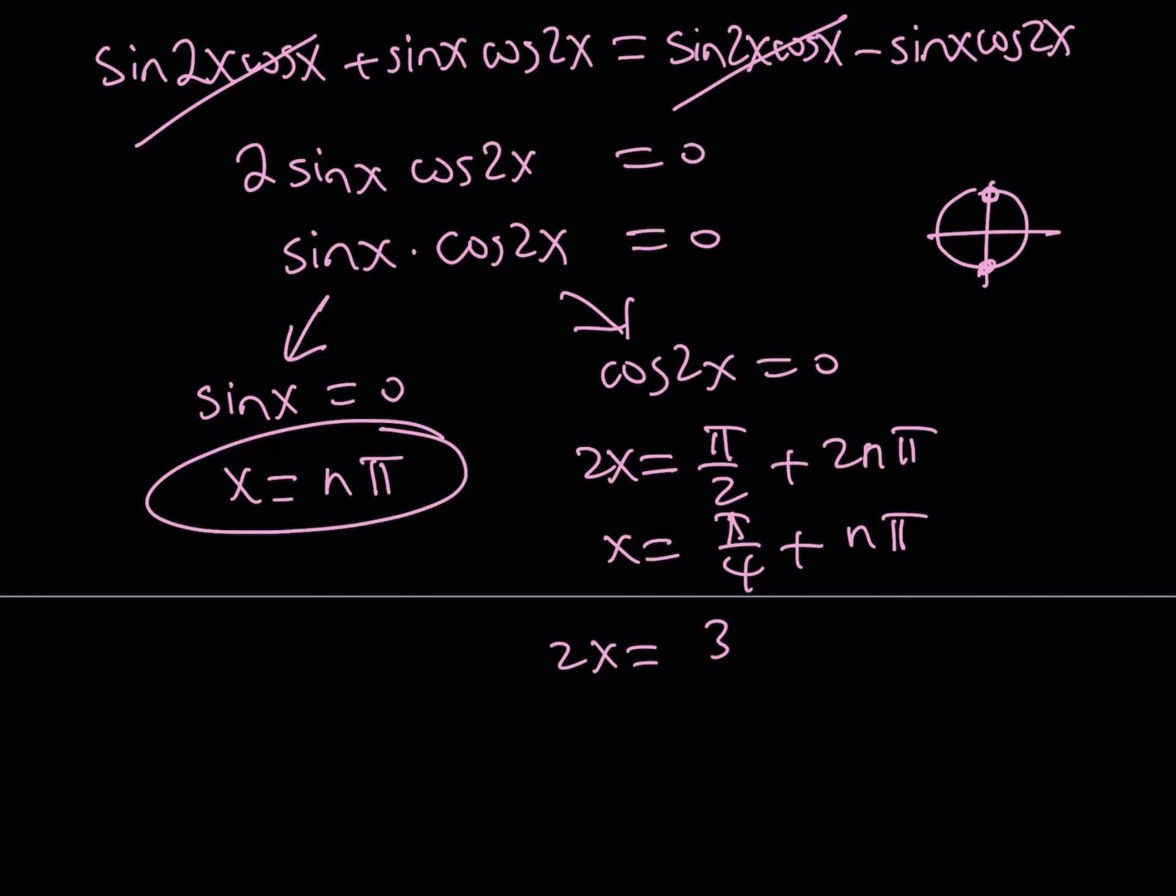But, of course, at the same time, we can do 3 pi over 2 plus 2n pi, and dividing both sides by 4, you're going to get 2 pi over 4 plus n times pi. So, this is going to give us another set of solutions for this one.